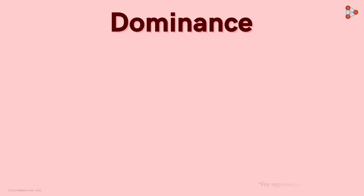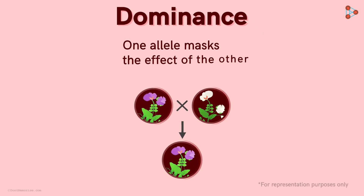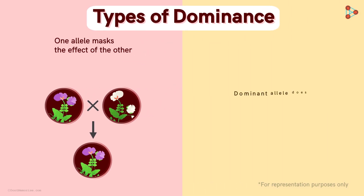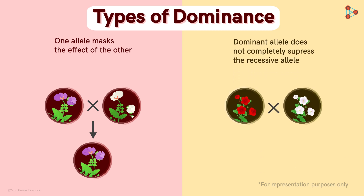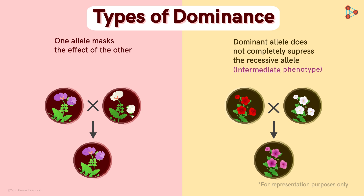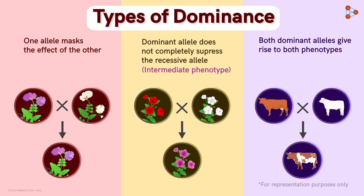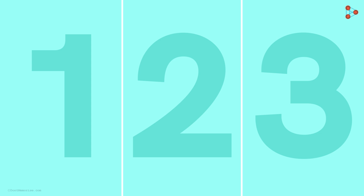Dominance is a phenomenon in which one allele masks the effect of the other. In some cases, a dominant allele does not completely suppress the recessive one — the blend of both genes is seen with an intermediate phenotype. And if both different genes are dominant, an individual with both phenotypes is obtained. We have learnt all three types of dominance so far.